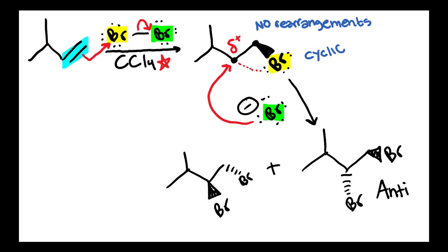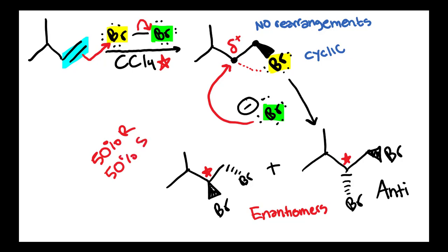What we want to consider then is what is the relationship between our two products? We want to check — is there a chiral center? There is — we have one chiral center. Remember, this is not a chiral center because you have two hydrogens there. A chiral center is a carbon with four distinct groups bonded to a tetrahedral carbon. So the carbon with the red arrow would not be considered a chiral center because it has two of the same groups, the hydrogens. So we have one chiral center, and the relationship between these two molecules is they are enantiomers of each other. We're going to form 50% of the R enantiomer and 50% of the S enantiomer. That is known as a racemic mixture when you get 50% of both enantiomers.